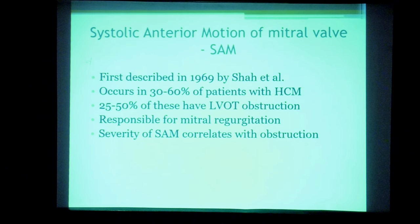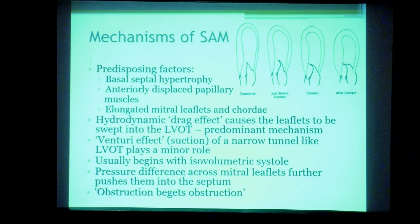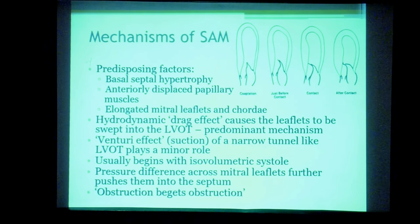SAM, or systolic anterior motion of the mitral valve, was first described in 1969 by Shah et al. It occurs in about one-third to two-thirds of patients with HCM, and at least half of these patients will demonstrate LVOT obstruction. SAM is a marker of LVOT obstruction and is directly responsible for the mitral regurgitation in these patients. The predisposing factors include hypertrophy of the basal septum, anterior displacement of the papillary muscles, and elongation of the mitral leaflets.